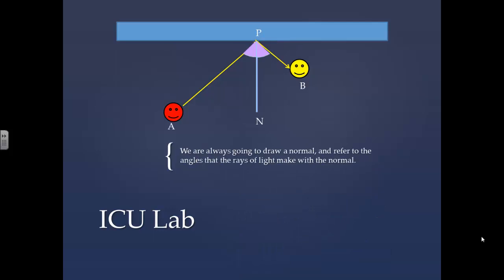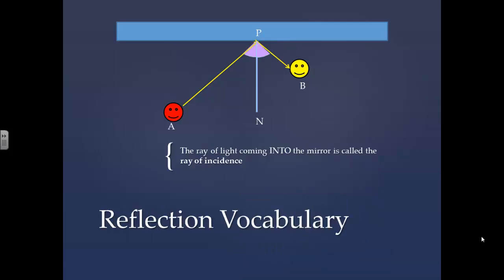We are always going to draw a normal and refer to the angles that the rays of light make with the normal. The ray of light coming into the mirror is called the ray of incidence.